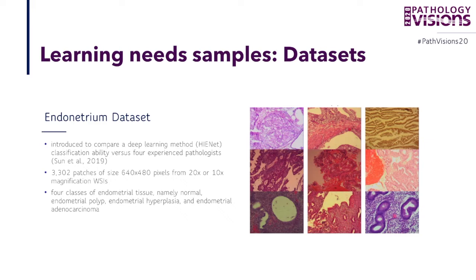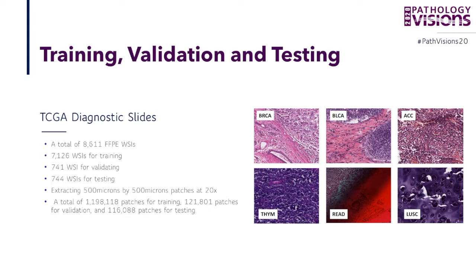Another dataset used in this study is the endometrium dataset, introduced almost a year ago to compare deep learning techniques against experienced pathologists. It contains more than 3,000 patches of size 600 by 400 pixels at 20x or 10x magnification. Patches were extracted with four classes of endometrial tissue: normal, hyperplasia, adenocarcinoma, and so on. Training, validation, and testing of KimiaNet itself was done based on TCGA, because TCGA has the whole slide images. Some have high quality and some rather low quality — but that also reflects the reality of hospital practice.